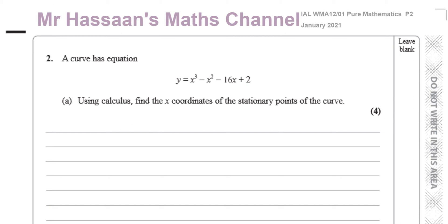Welcome back. I am now going to answer question number two from the January 2021 International A-Level Edexcel Pure Mathematics P2 paper. This question is about a cubic curve, y equals x cubed minus x squared minus 16x plus 2. We are asked to use calculus to find the x-coordinates of the stationary points of this curve.